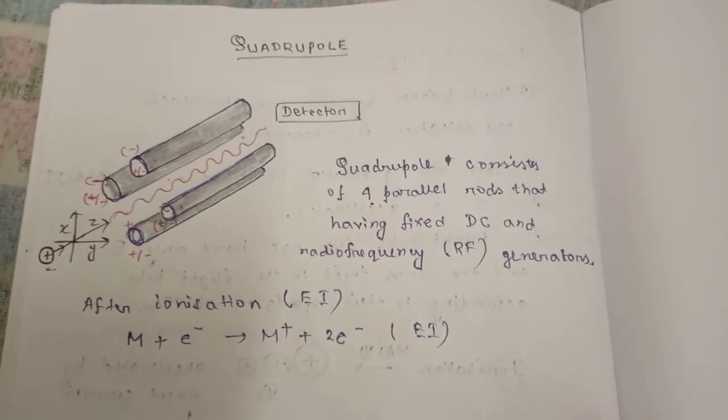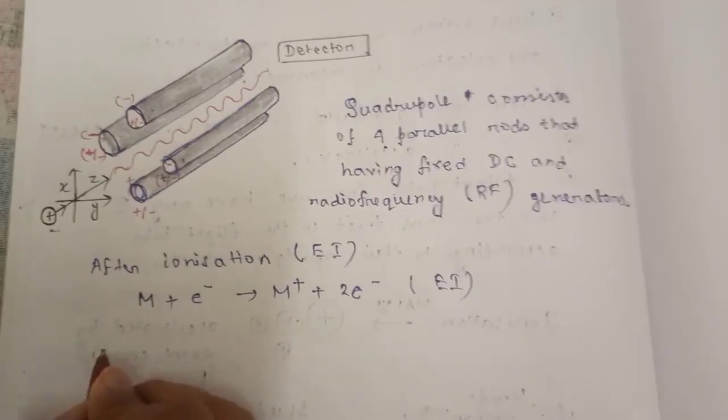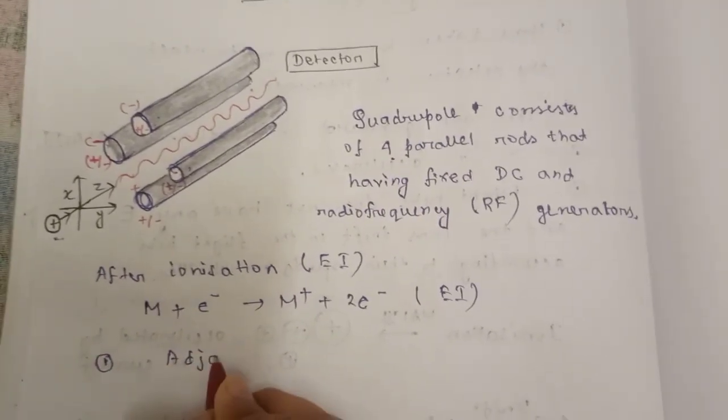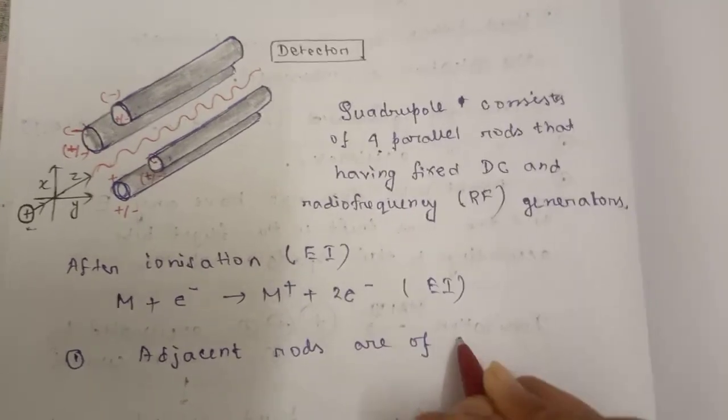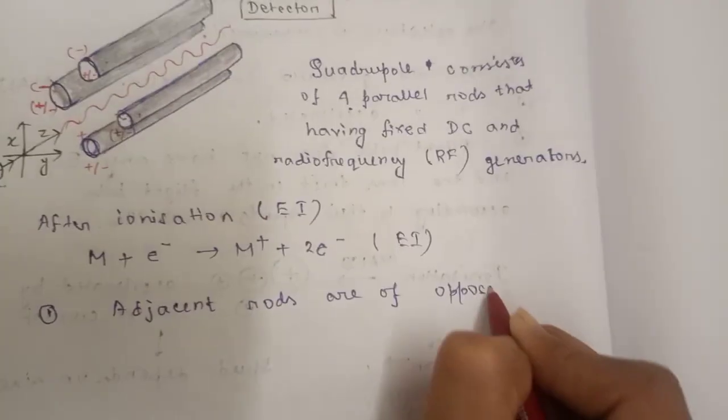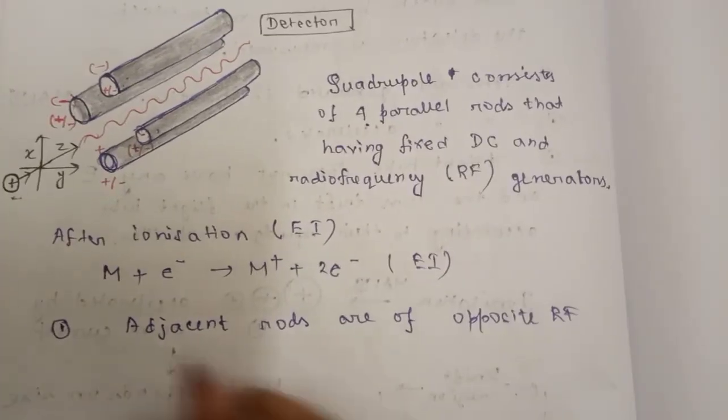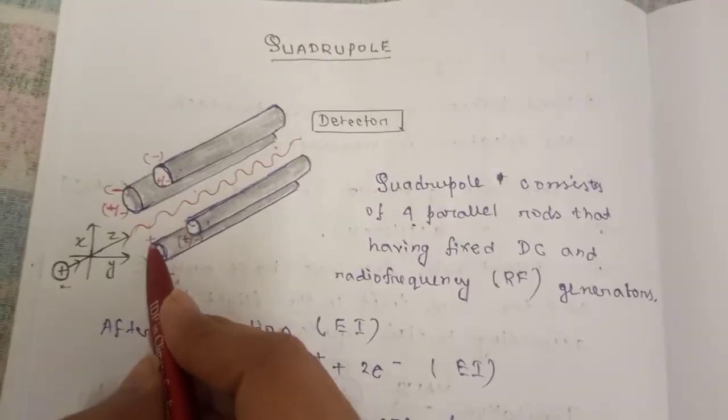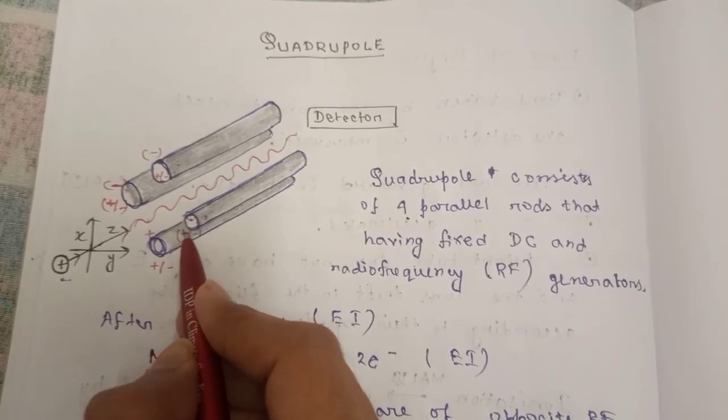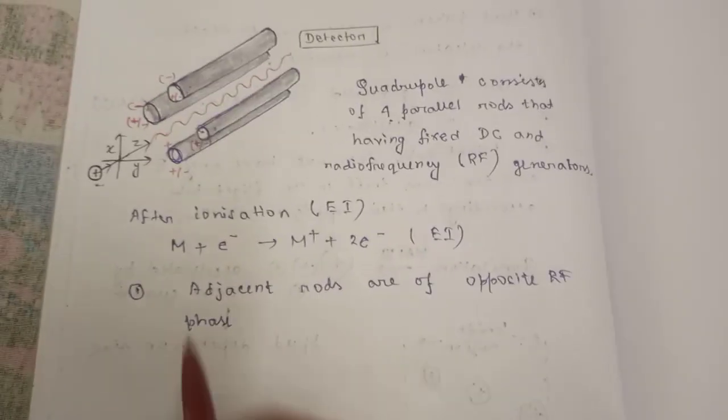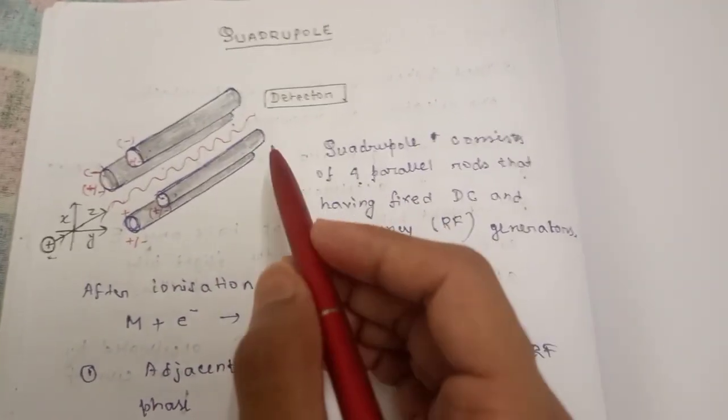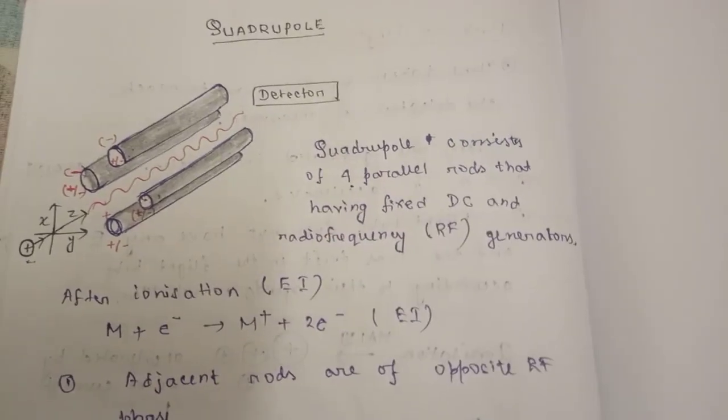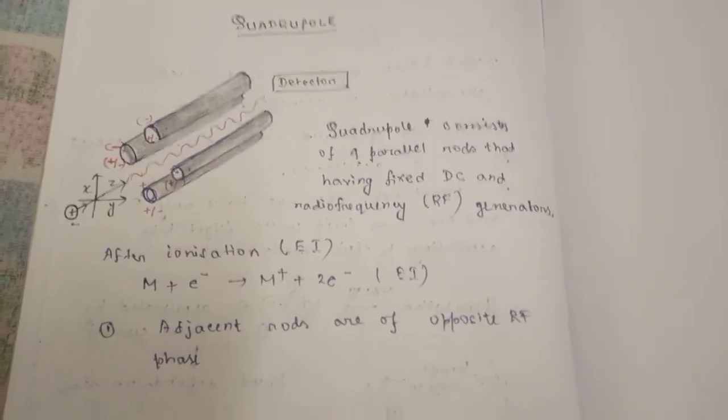One thing has to be remembered for quadrupole: adjacent rods are of opposite radio frequency phase. Here you can see plus and minus, and plus minus. They are in opposite phase, and ions will be passed through the rods and go to the detector for further analysis and electrical output. This is how quadrupole works.